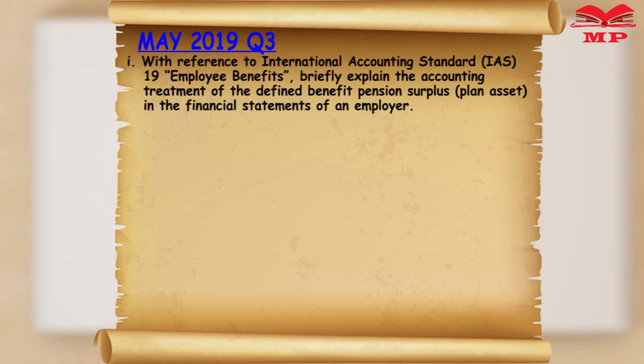We start with the first part, that is part Roman one. The question is: with reference to International Accounting Standard IAS 19 Employee Benefits, briefly explain the accounting treatment of a defined benefit pension surplus — in brackets, a pension asset — in the financial statement of an employer.